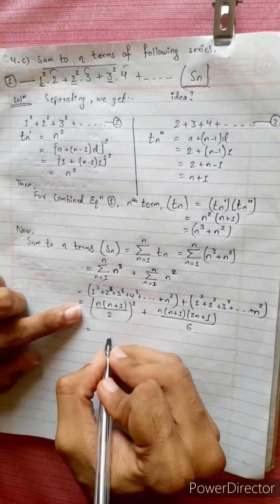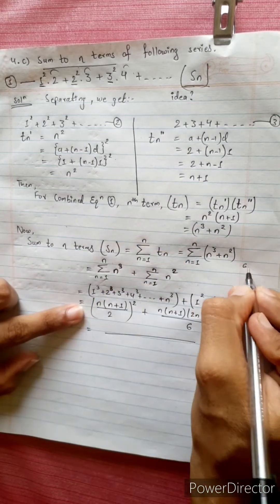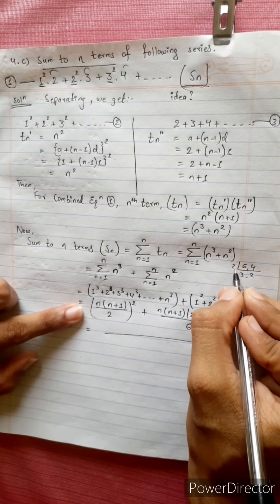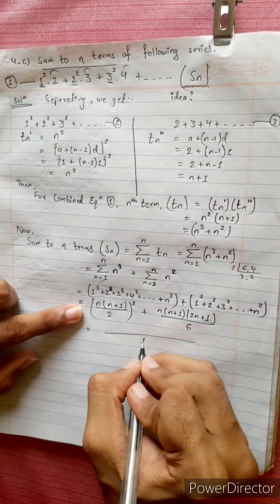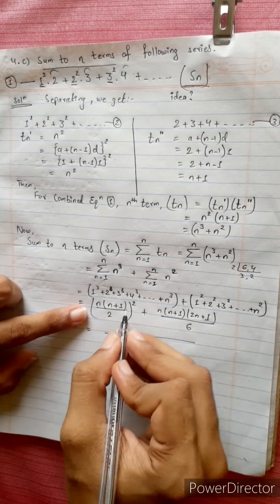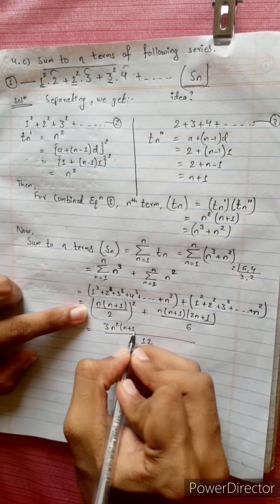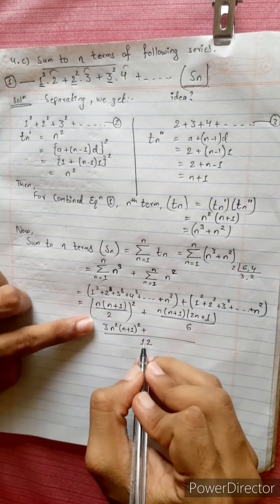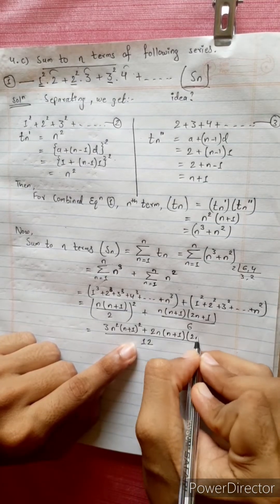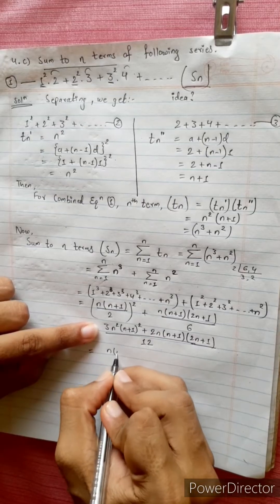Applying the formula: sum of squares of natural numbers and sum of cubes of natural numbers. We get expressions involving n(n+1)/2 squared terms, leading to 3n squared times n plus 1 over 4 squared, plus 6 terms with n plus 1.